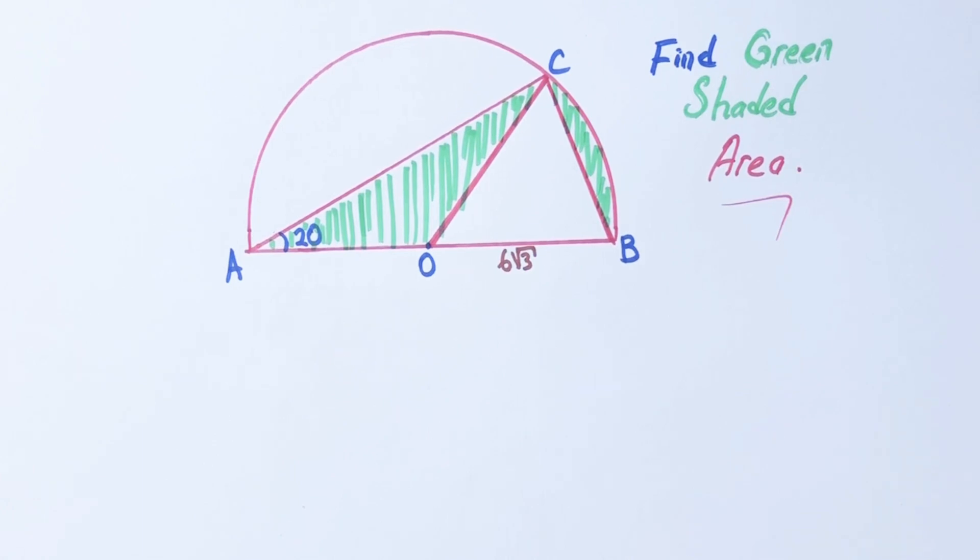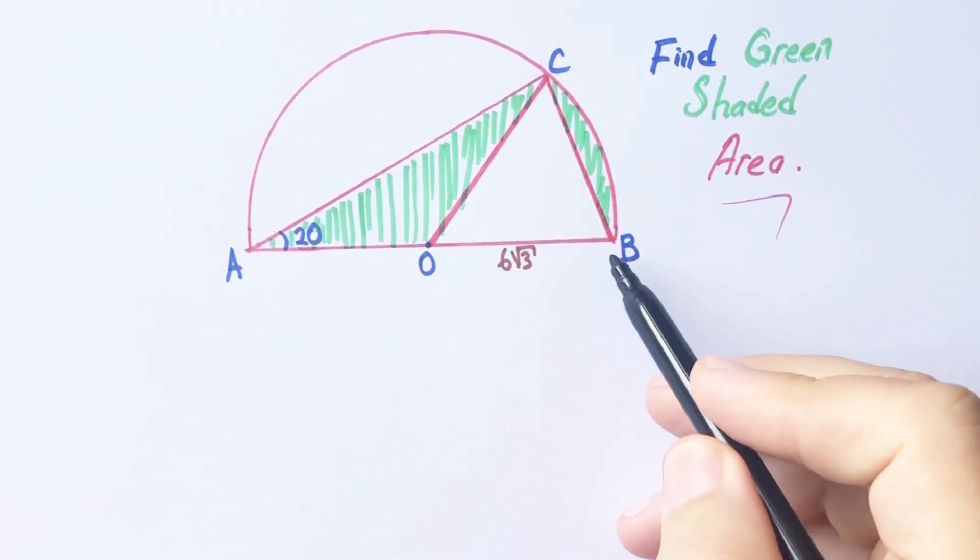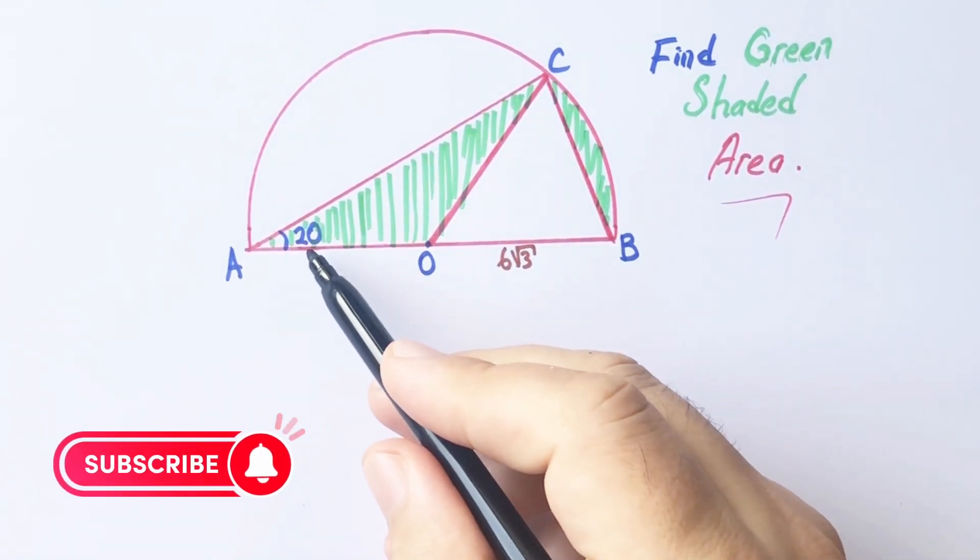Hello everyone, in this video we have one same circle, and O is the center of the same circle. We will calculate the green shaded area.